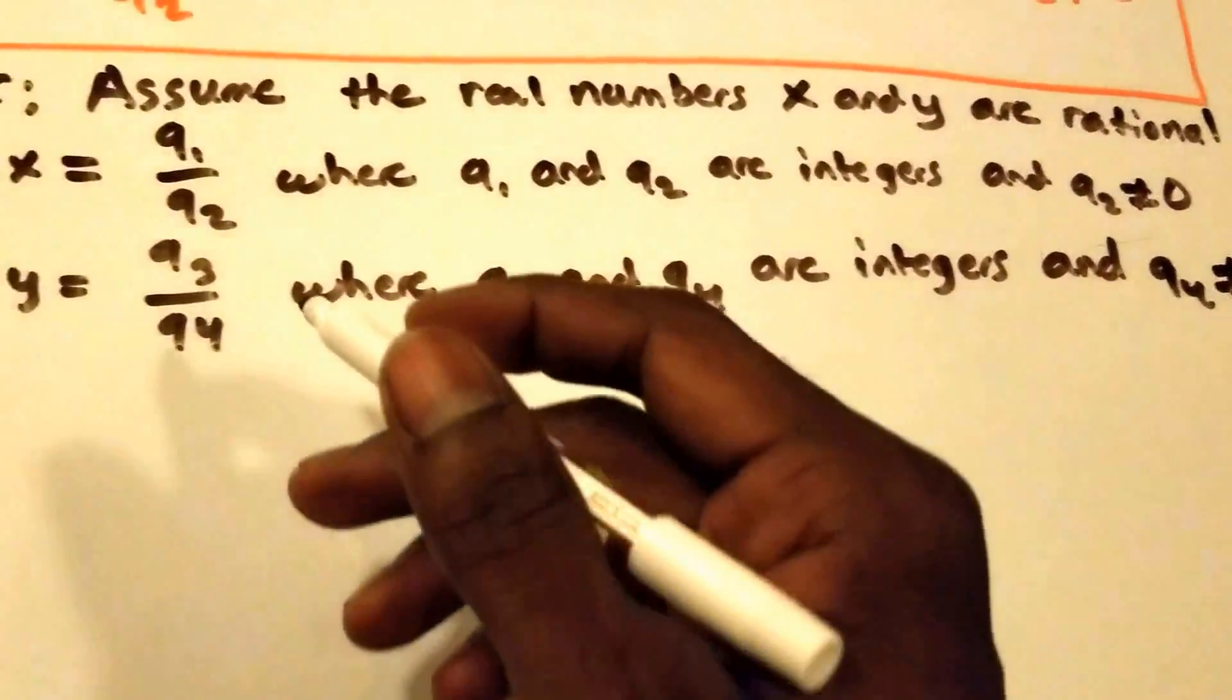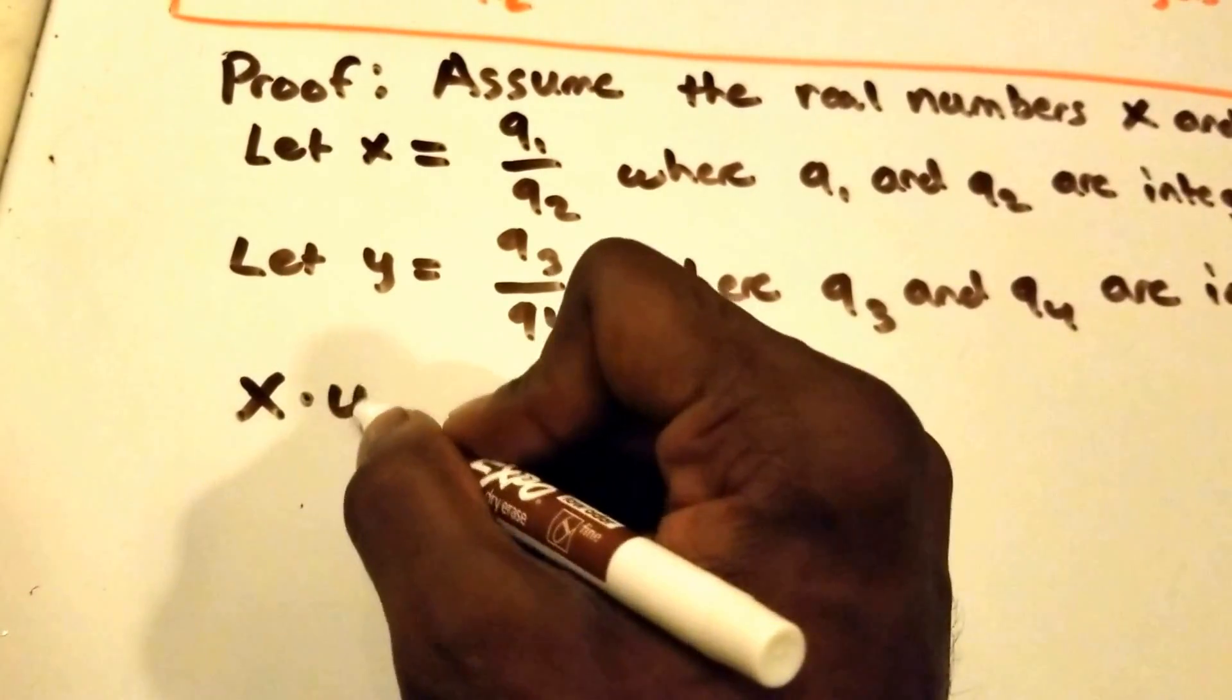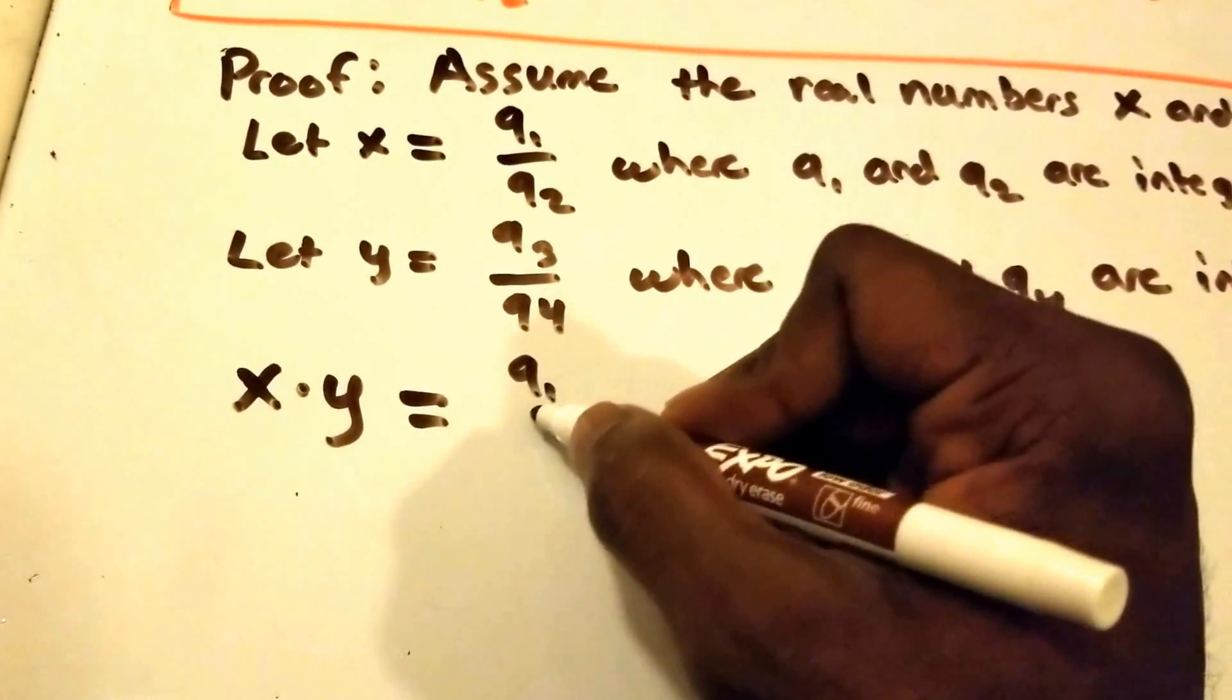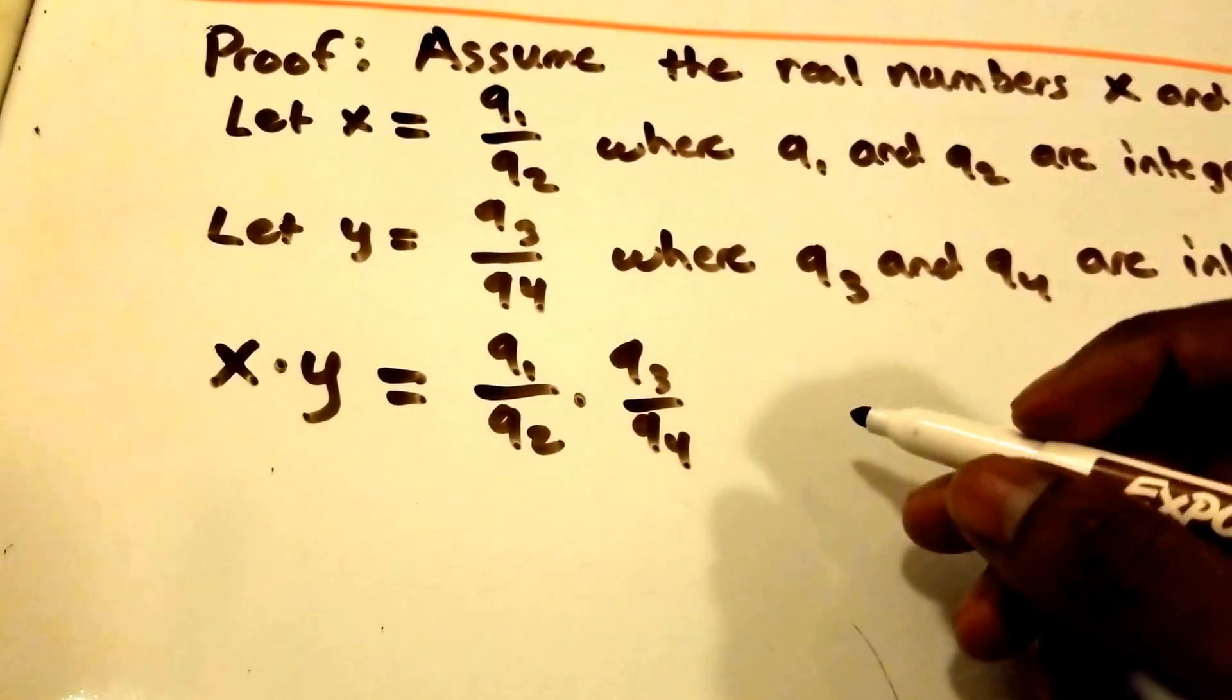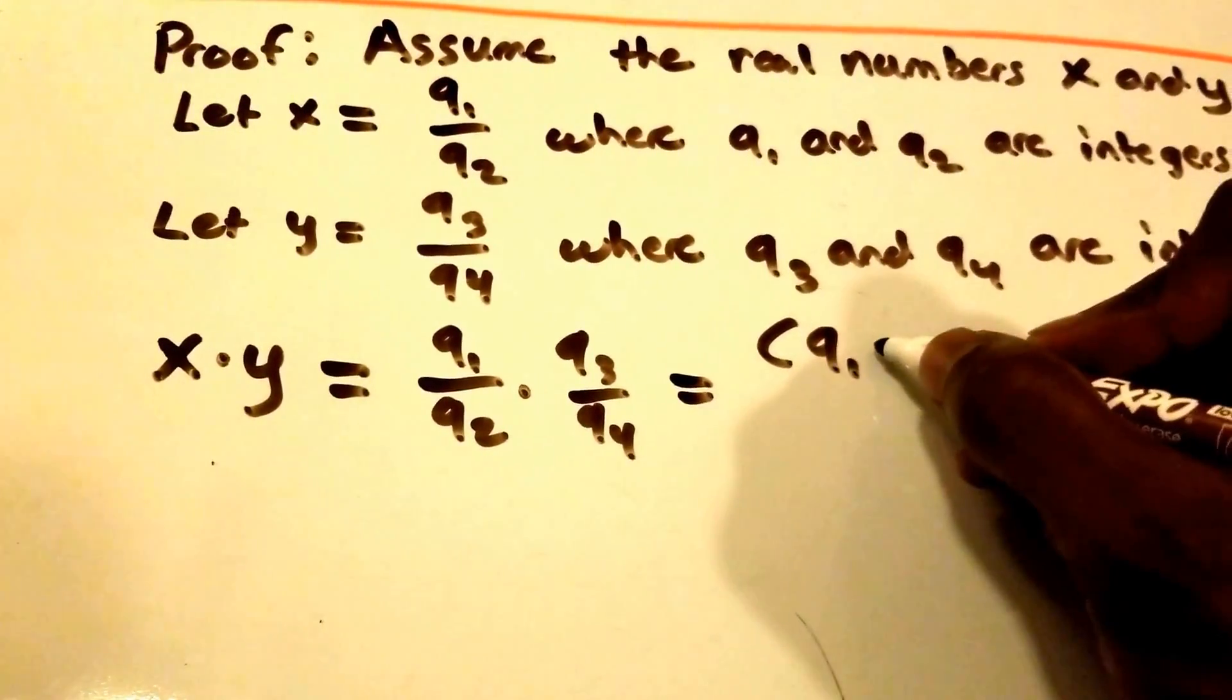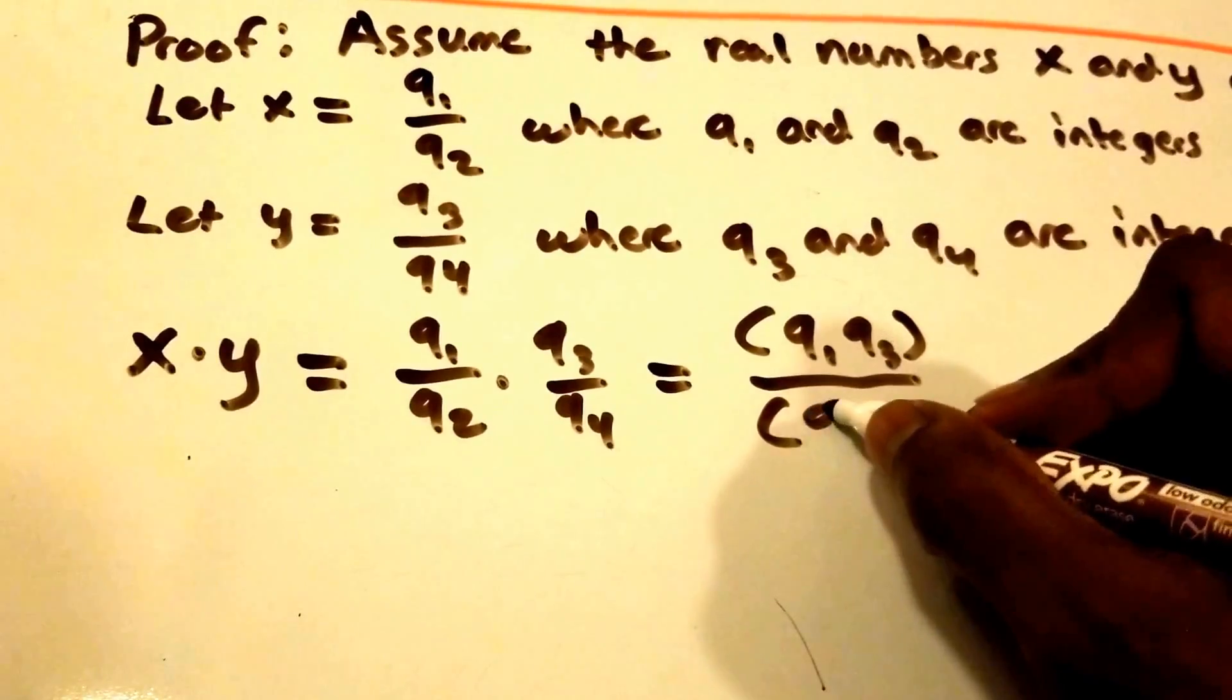So we have the product of x and y, that's x times y, and that means that this is equal to q1 over q2 times q3 over q4, and this is equal to q1 times q3 over q2 times q4.